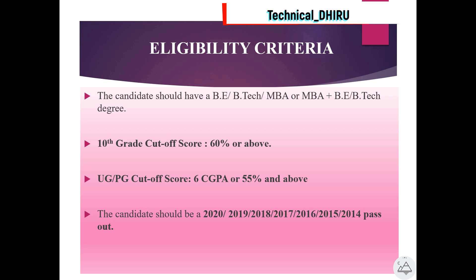Eligibility criteria for the BDA profile: the candidate should have a Bachelor's in Engineering (B.Tech), MBA, or MBA plus B.Tech degree. The 10th grade cut-off score should be 60% or above. UG or PG cut-off score should be 6.0 CGPA or 55% and above. The candidate should be a 2014, 2015, 2016, 2017, 2018, 2019, or 2020 pass-out.